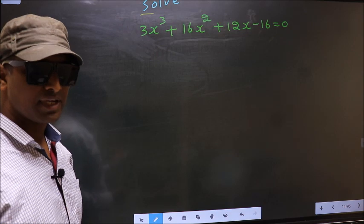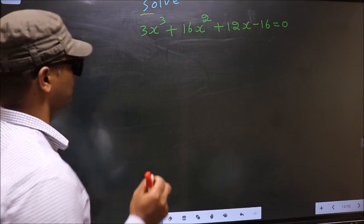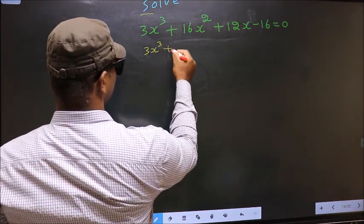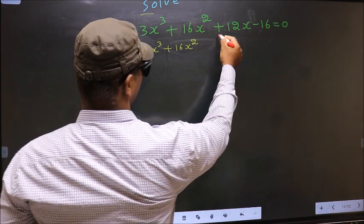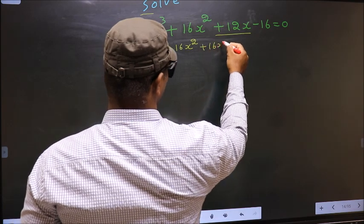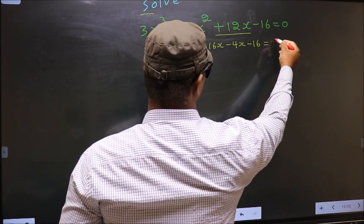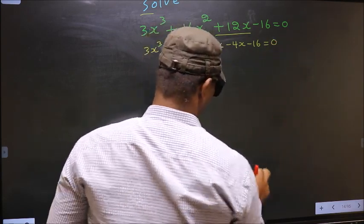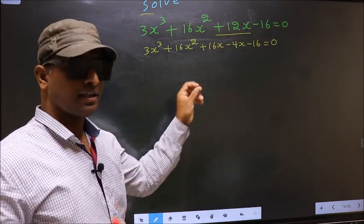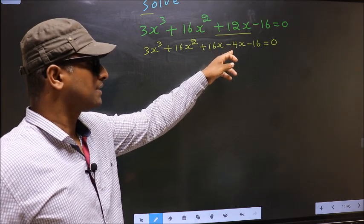For that we have to change the x term. In place of plus 12x, I write plus 16x minus 4x minus 16 equal to 0. So in place of plus 12x, I have written plus 16x minus 4x.